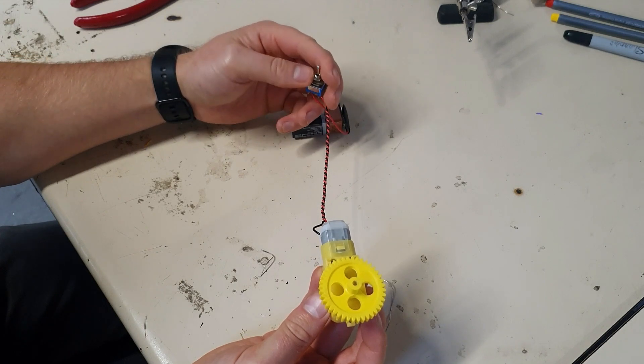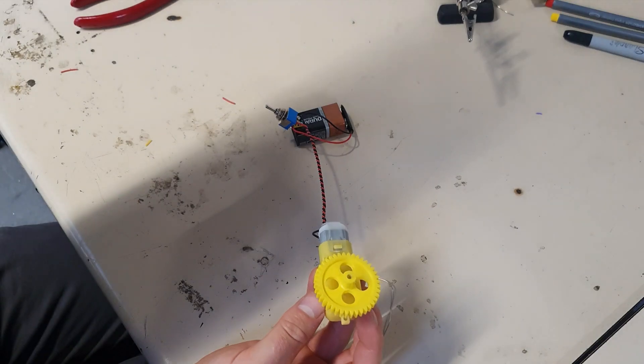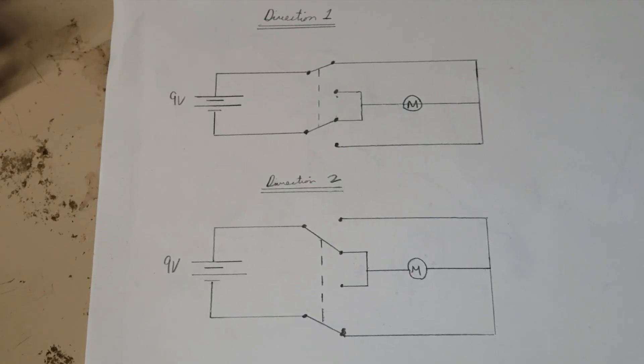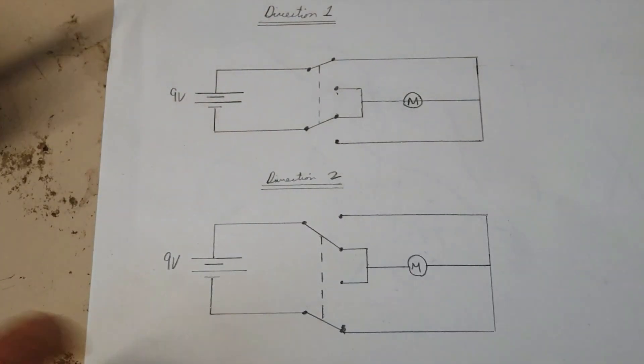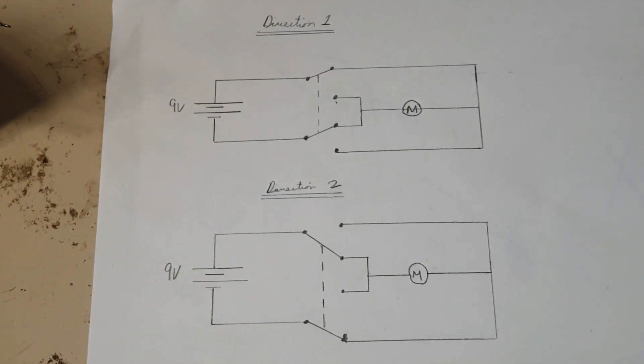So that's a double pole, double throw, center off. So I'm going to just have a quick run through the circuit diagram with you now. Okay, everyone. So here are the circuit diagrams. So we've seen on the opposite of this sheet and earlier on in the video, the wiring diagrams. But the circuit diagrams are also important. So if you remember back when I had the battery in the motor.